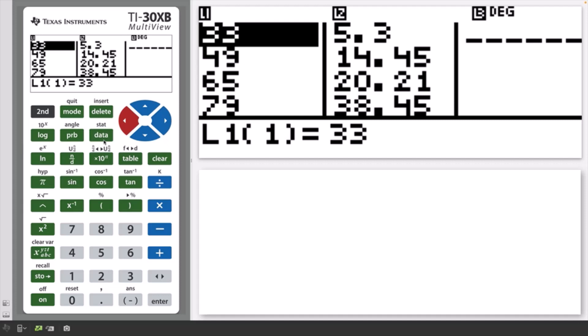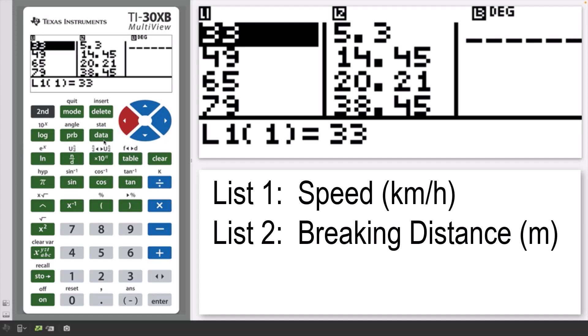The data shown in list 1 and list 2 give the results of braking tests for a vehicle at four different speeds. They've been entered via the data key. The speeds in kilometers per hour are listed in L1. The braking distance in meters are listed in L2.